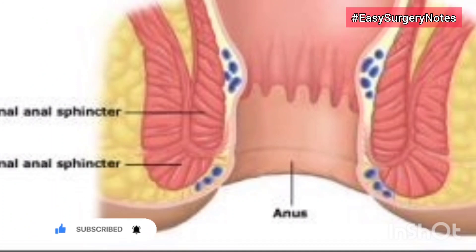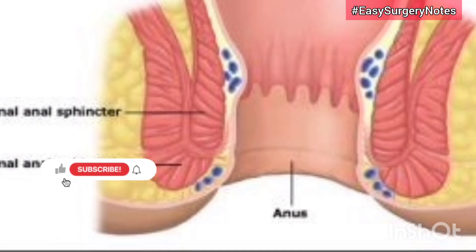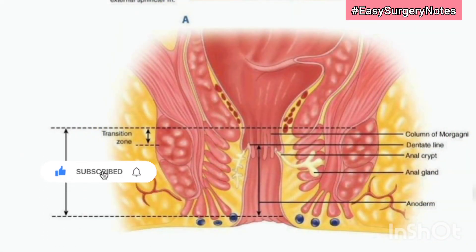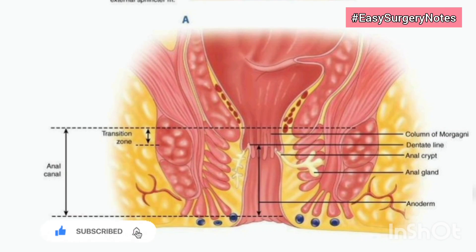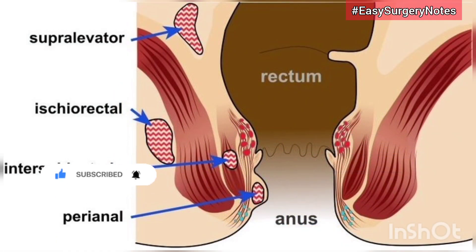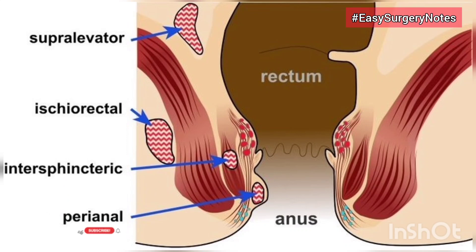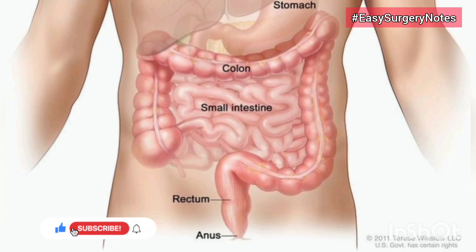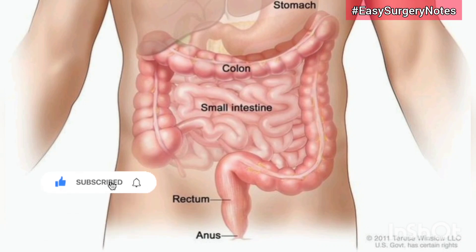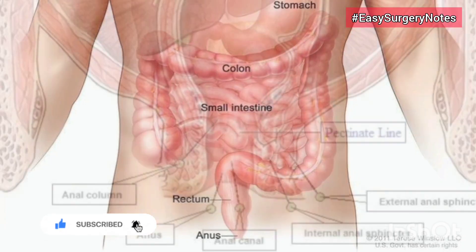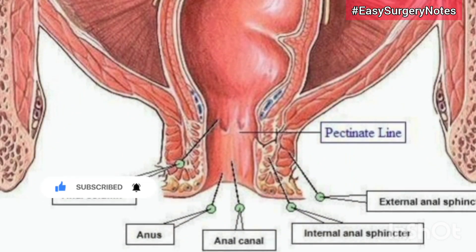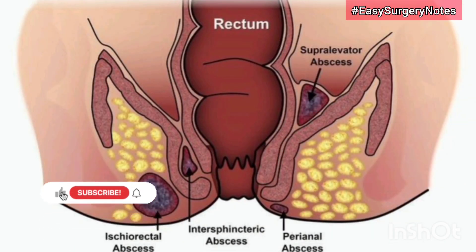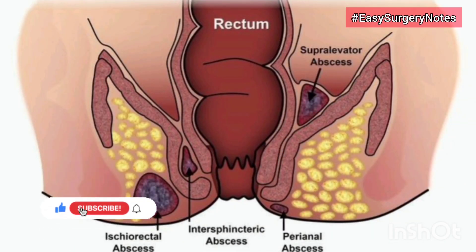Middle part: lies between the pectinate line above and the white line of Hilton below, about 15 millimeters long. It is lined by stratified squamous epithelium which is thin, glossy, and devoid of sweat glands. Hilton's line is situated at the level of the interval below the subcutaneous part of the anal sphincter and the lower border of the internal anal sphincter. On digital examination, an anal intersphincteric groove can be felt at this site. Lower part: about 8 millimeters long, lined by true skin containing sweat and sebaceous glands.